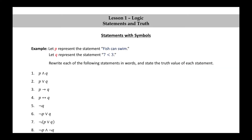Let's look at an example. Let P represent the statement 'fish can swim.' Let Q represent the statement 'seven is less than three.' Rewrite each of the following statements in words and state the truth value of each statement. We have eight statements: P and Q, P or Q, P implies Q, P if and only if Q, not Q, not P or Q, the negation of P or Q, and not P and not Q. Note that P, 'fish can swim,' has truth value T, while Q, 'seven is less than three,' has truth value F.